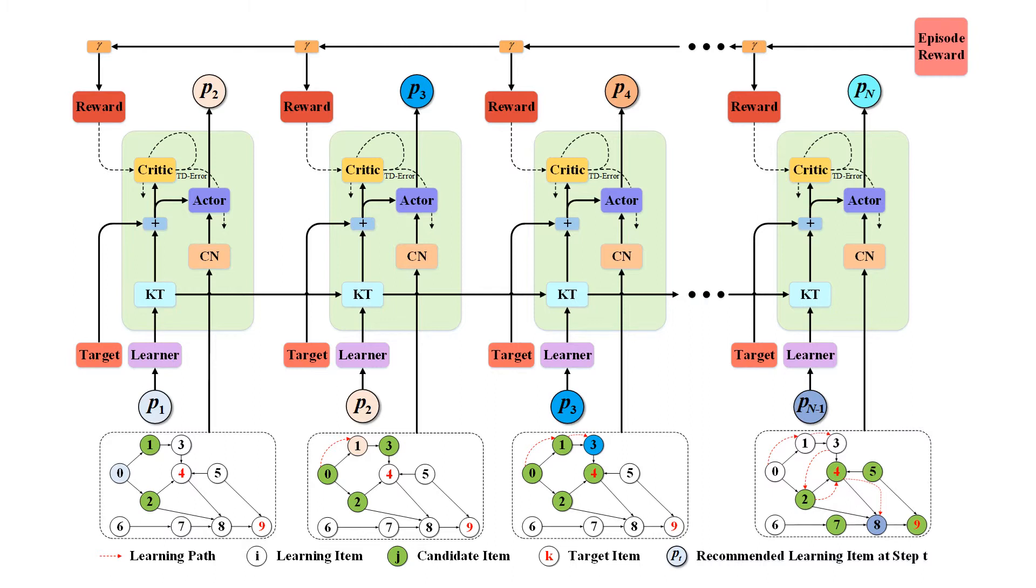The actor-critic recommender will determine what to learn next, whose parameters are updated to improve the effectiveness of the whole recommended learning path rather than that of only one item.